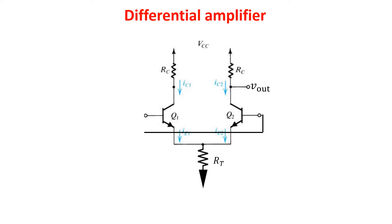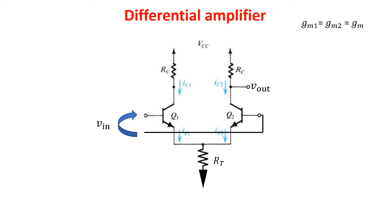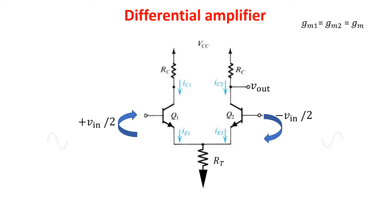Keeping in mind what we have seen in the common emitter configuration, we analyze the differential amplifier. We assume Q1 and Q2 are matched, so they are identical: GM1 equals GM2 equals GM, and also the output resistances RC of the two branches are identical, making the right branch equal to the left one. Rather than applying VIN directly, we study the equivalent situation where +VIN/2 is applied to one input and -VIN/2 to the other. This means the signals on the two inputs are in phase opposition.